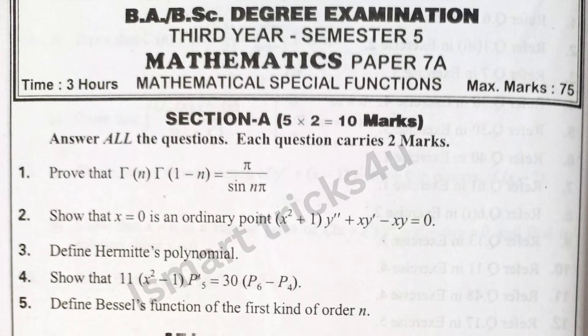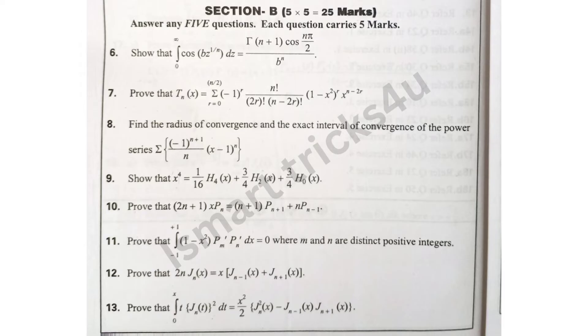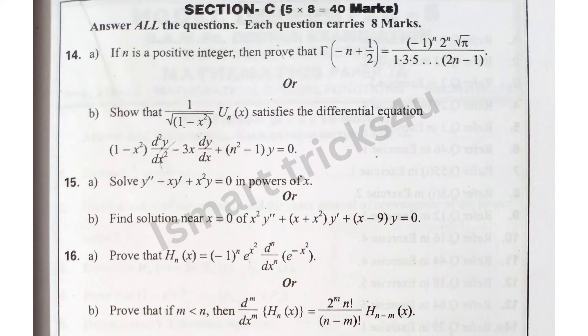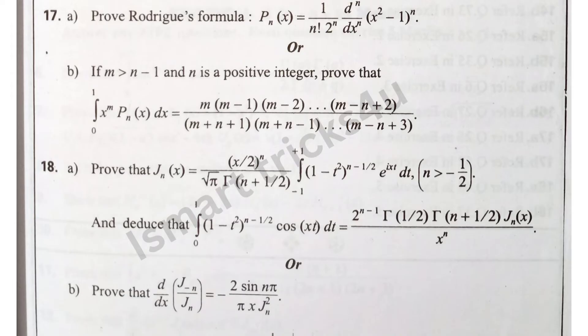4th model paper. It includes Section C long answers, short answers, and very short answers. Each unit is compulsory. If you want to pass, at least 3 units should be prepared. Because of internal choice, you can skip a unit. So preparing every 4 units is recommended.